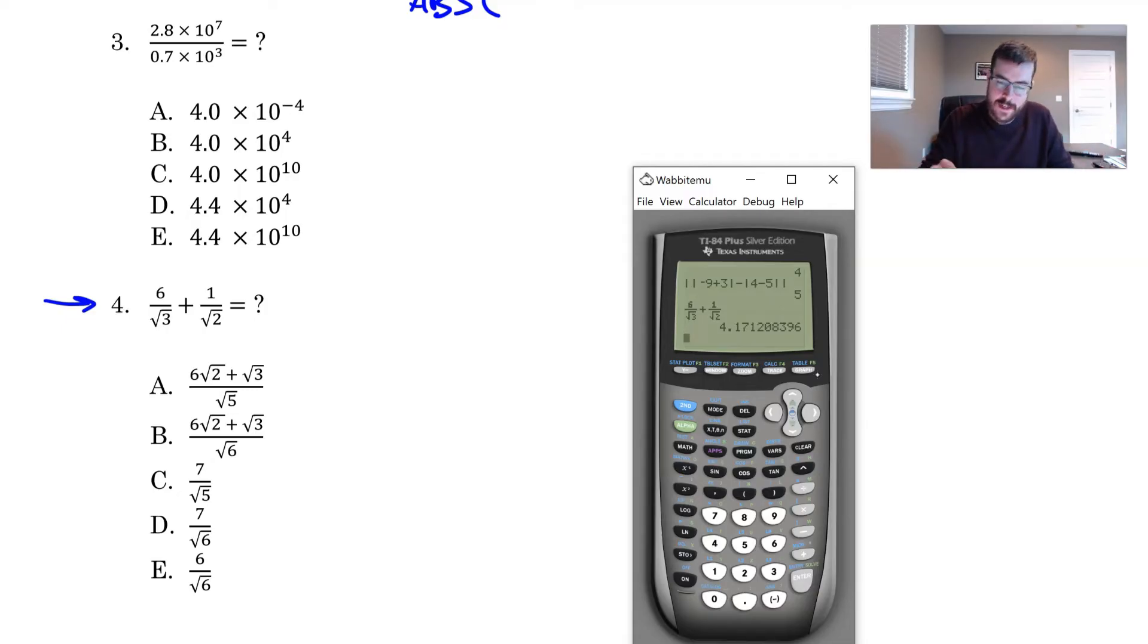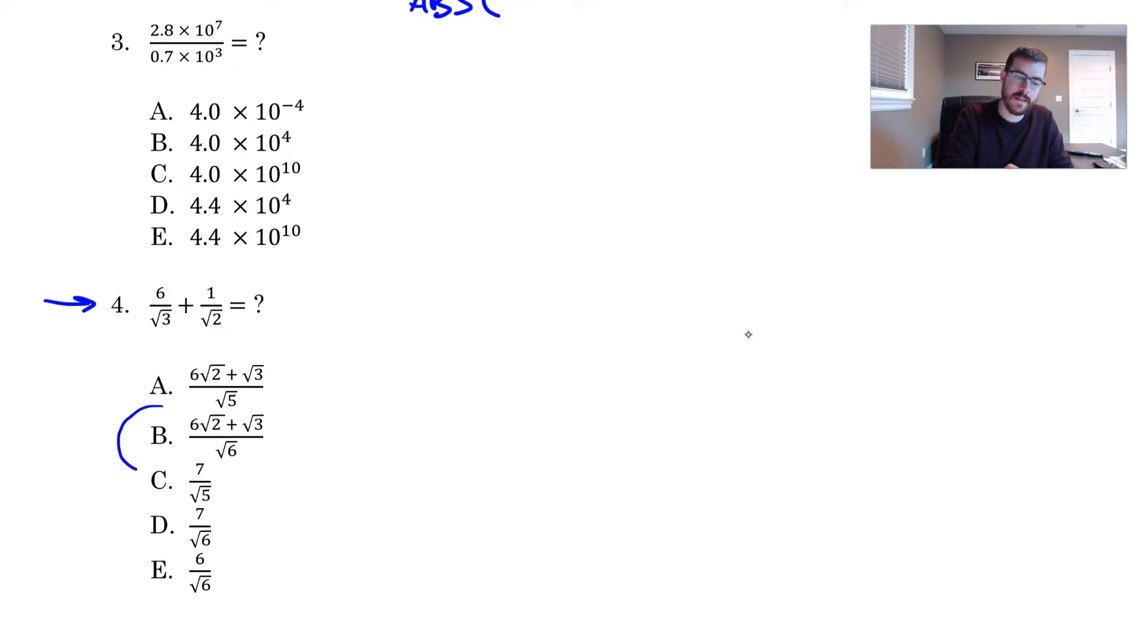So I might go to choice A and type this in. Well, that's not the same thing. Now B looks very similar to that except it's over radical six. So rather than type the whole thing again, what you can actually do is just go up, highlight the one you already did, click enter, and then just go back and edit it. So I just need to change that five to a six. Oh, look at that, 4.1712. That's the exact same answer I got. So I know that this answer would be choice B here.